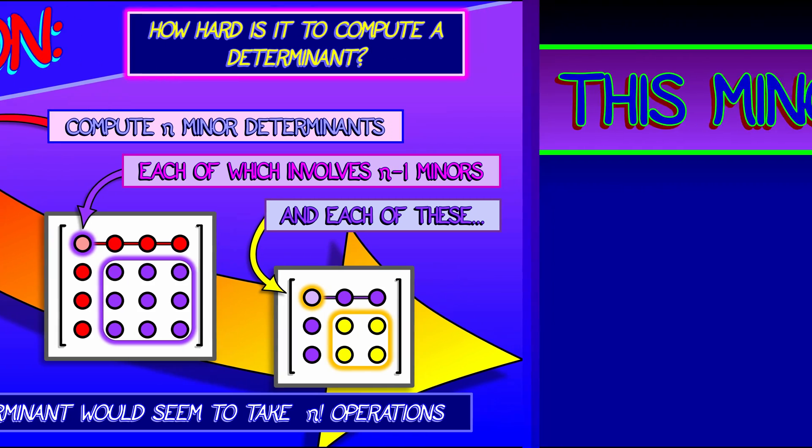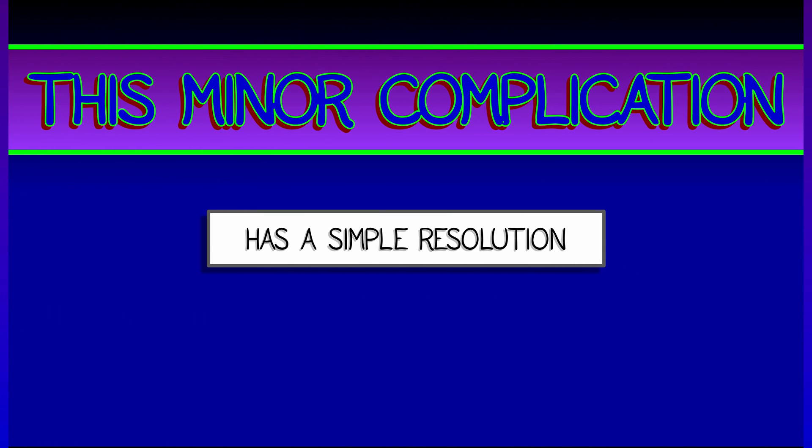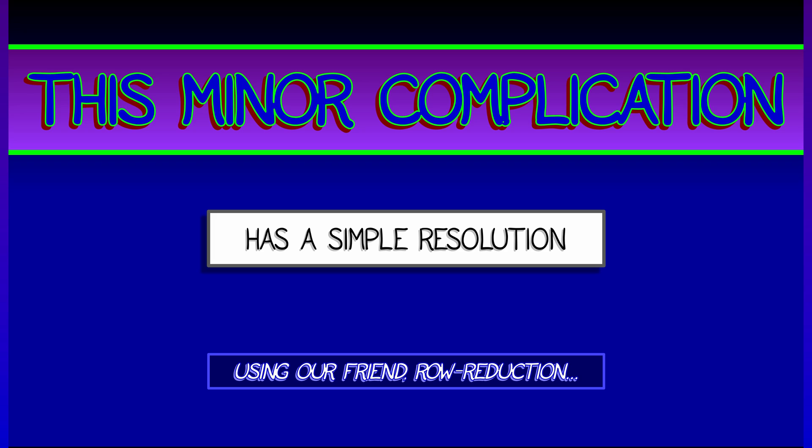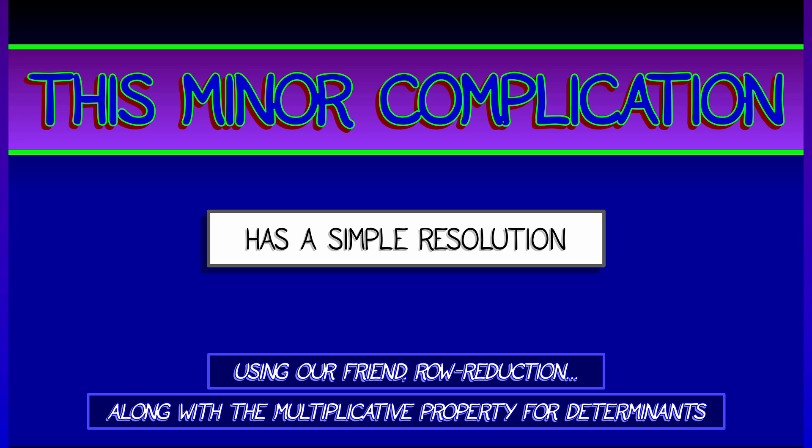So what are we going to do? We're going to give up? No, we're not going to give up. There's an easy way to fix this if we remember what we've learned, namely row reduction and the multiplicative property of determinants.